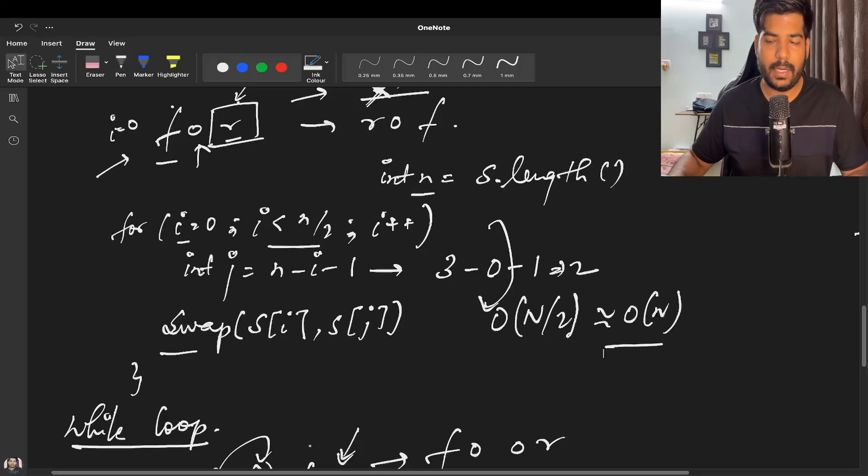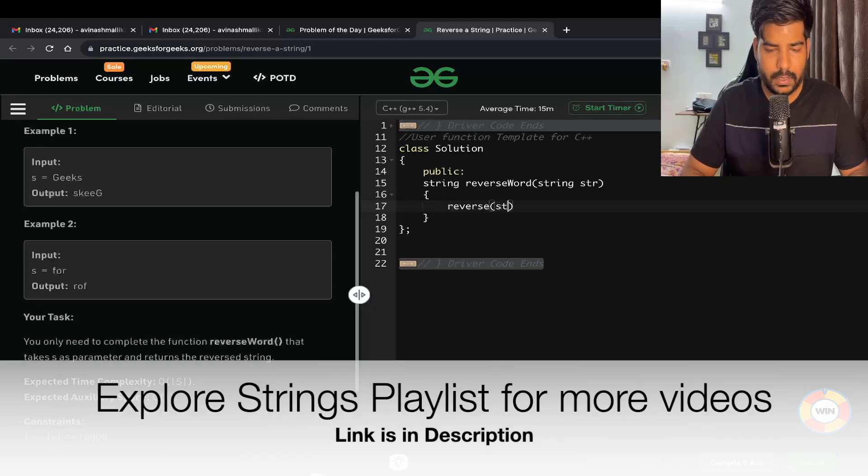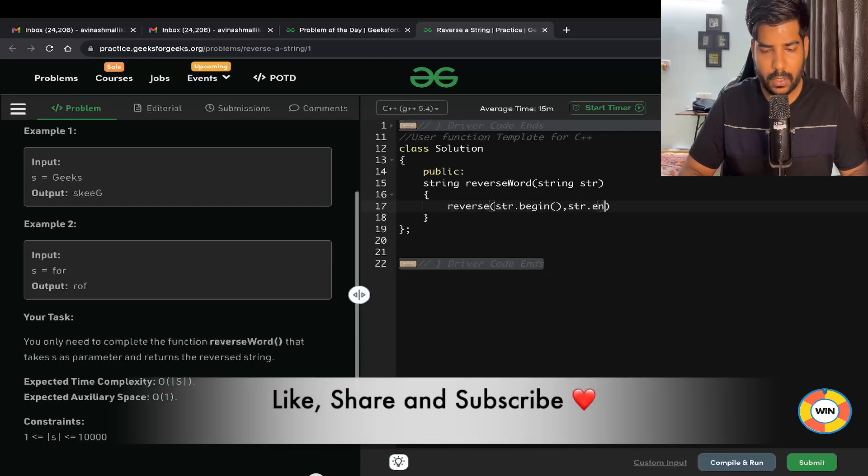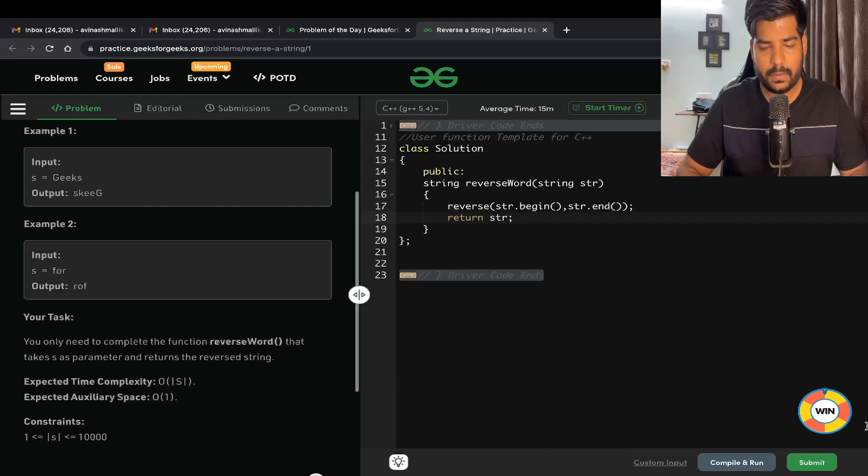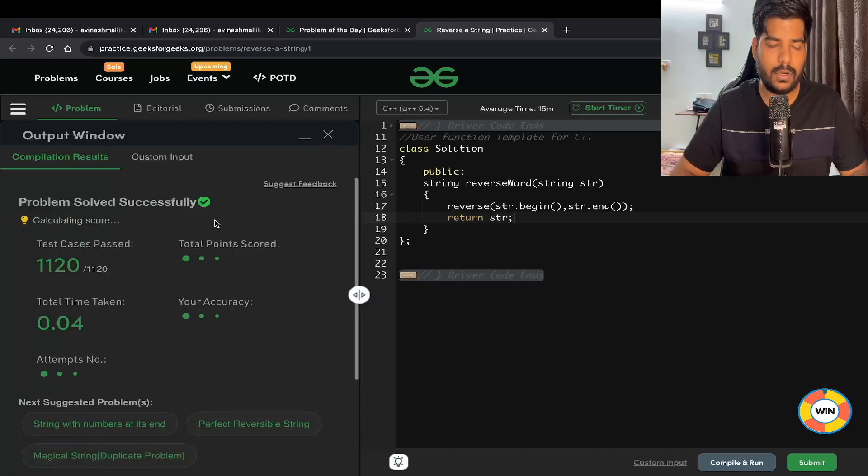Let's implement in code. The code will be simple - we can use the inbuilt function reverse with str.begin and str.end, and then return our string. That's it. We can submit this, and our solution got accepted.